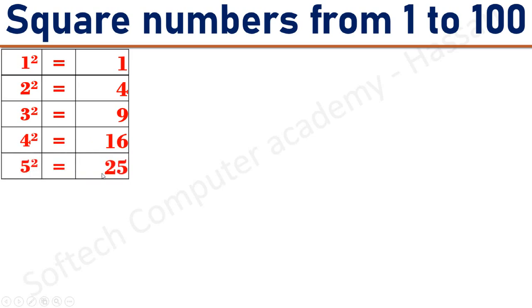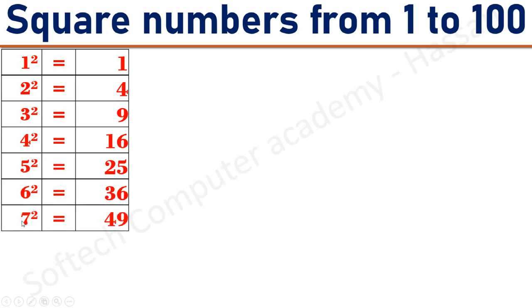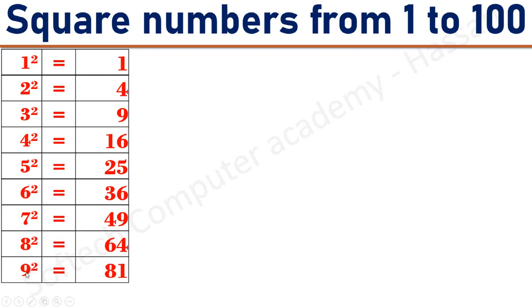5 square equals 25. 6 square equals 36. 7 square equals 49. 8 square equals 64. 9 square equals 81. 10 square equals 100.